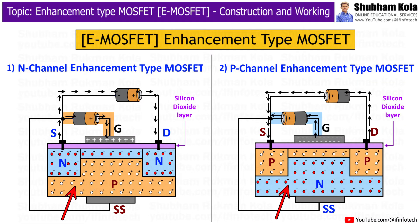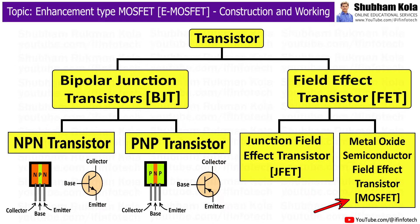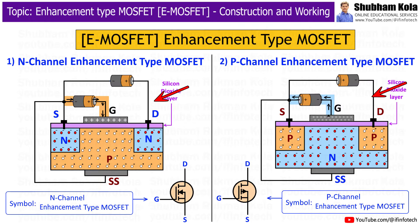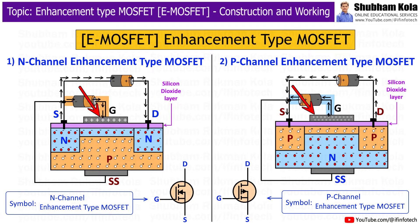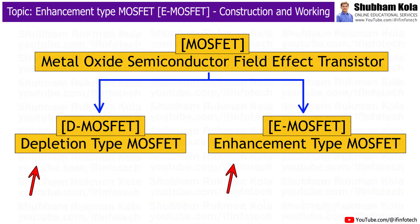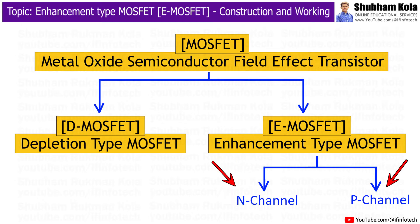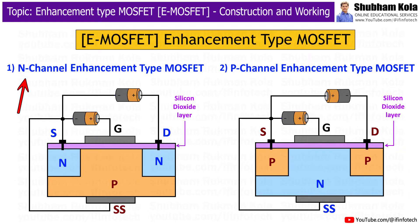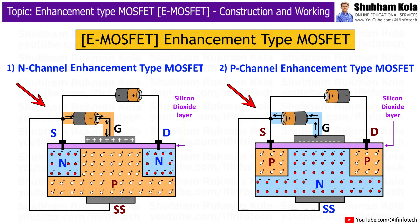In this video, we are going to learn about the construction and working of enhancement type MOSFET. The full form of MOSFET is Metal Oxide Semiconductor Field Effect Transistor, which is a type of field effect transistor that controls the flow of current in a circuit using an electric field. There are two main types of MOSFETs: Enhancement type MOSFET and Depletion type MOSFET. Our focus today is on Enhancement type MOSFET, which also comes in two versions: N-channel and P-channel. We will first discuss the construction of both types, then move on to the working of each type.